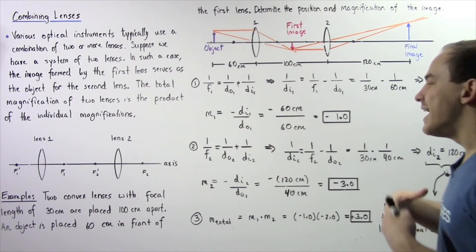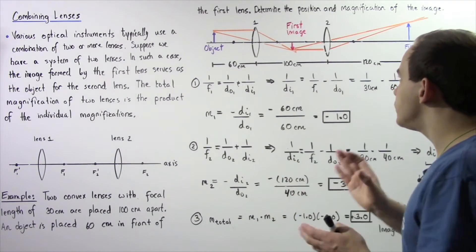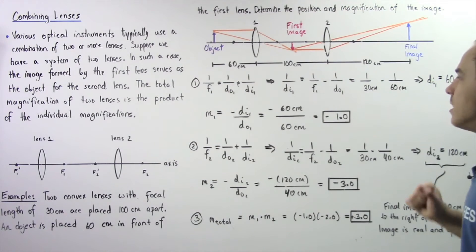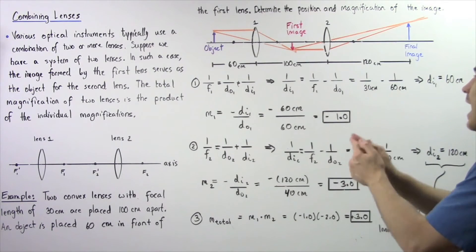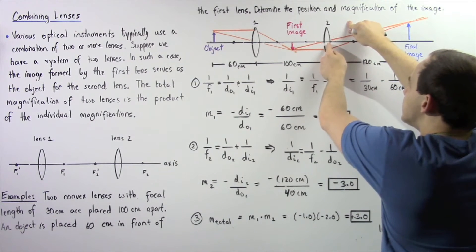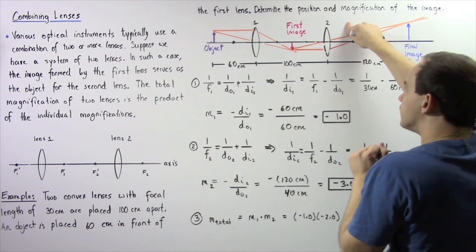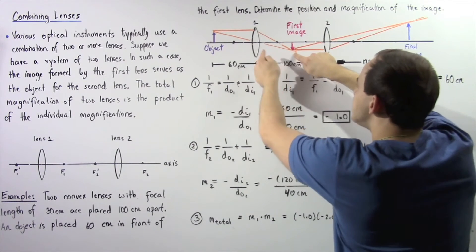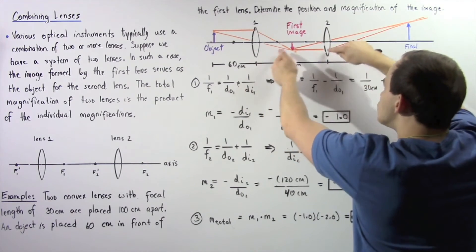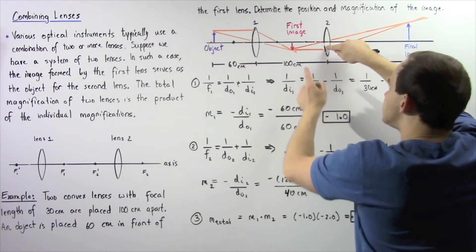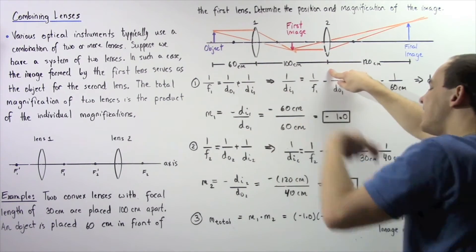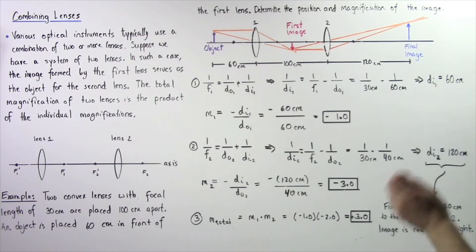Now let's move on to part two. We want to use the first image as the object for lens number two. The object distance for lens two is the distance from the center of lens number two to where the first image is formed. Since the first image is 60 centimeters from lens one, and the total distance between the two lenses is 100 centimeters, this distance is 100 minus 60, which gives us 40 centimeters.